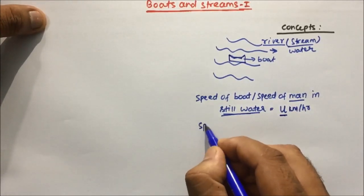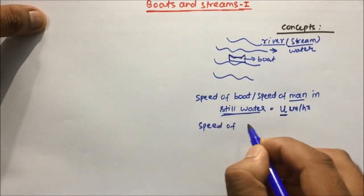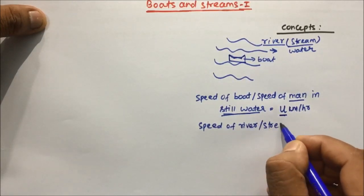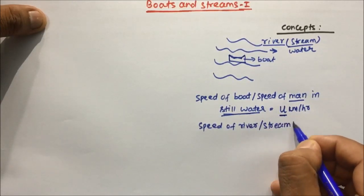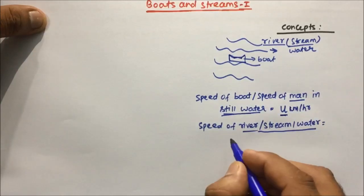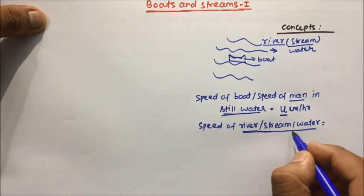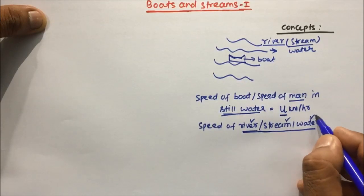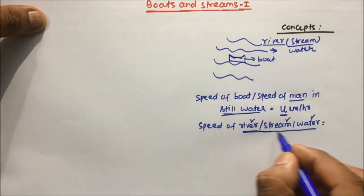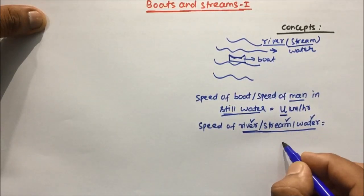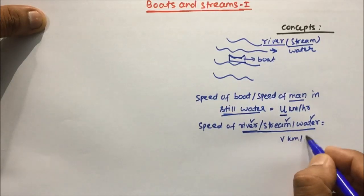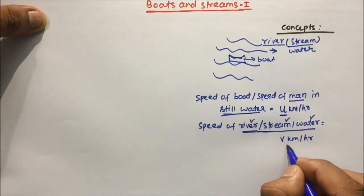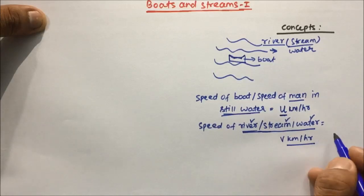Then there is the Speed of River, or Speed of Stream, or Speed of Water. In your question, all three terms — River, Stream, or Water — will be mentioned, and all three things are exactly the same. This speed will be denoted as V km per hour.